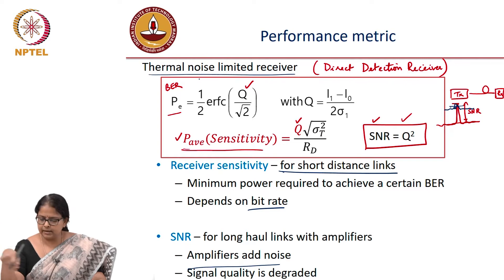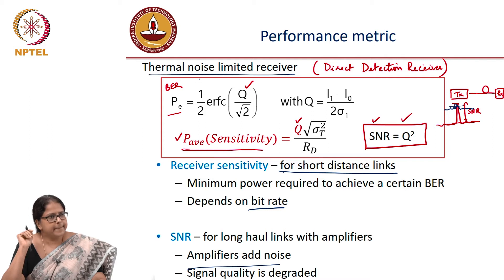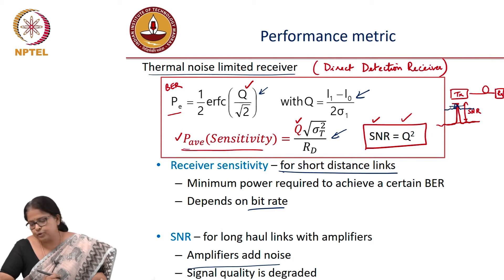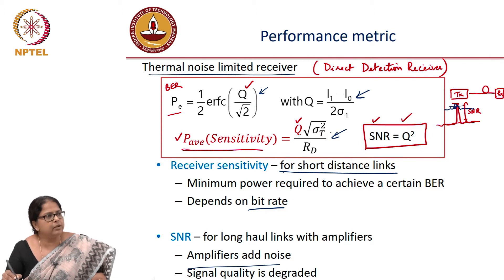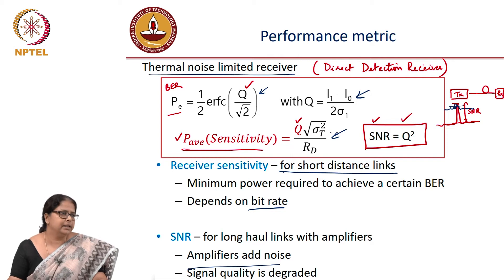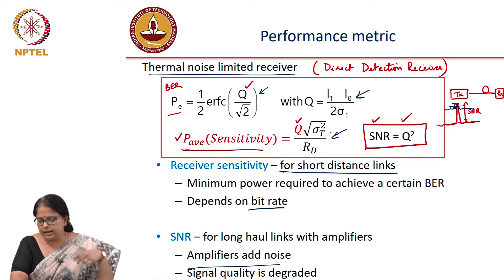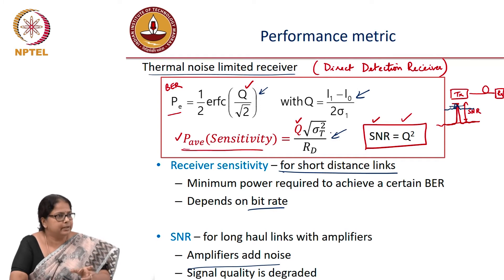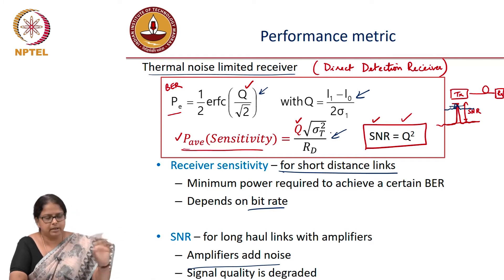Would this relation be different if it is a PD or an APD? The probability-based relations are not going to be different. For thermal noise, I just have to calculate the thermal noise of my APD rather than PD — that is all. If there is an additional noise factor, we have already discussed in the last module how to calculate noise for different types of detectors; you just plug in those numbers.